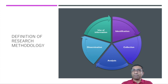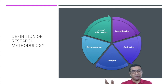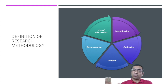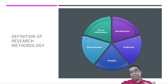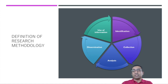First we identify a particular issue or topic of research, then we collect information and data to provide evidence for a solution. We analyze the data collected, then disseminate our results and use that information in a meaningful way to get meaningful results. That is research methodology.